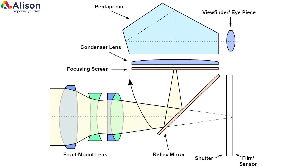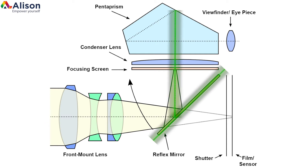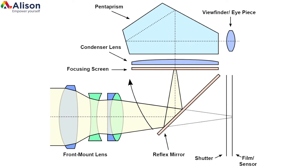The second thing is the reflex mirror. This is essentially a diagonal element which acts as a mirror that reflects the light coming in from the lens up towards the viewfinder. Basically, the light is bent around and into your eyes, allowing you to see the scene.